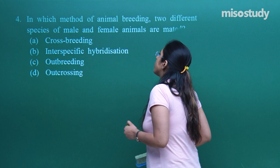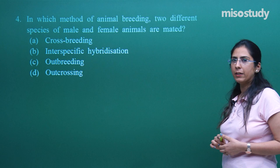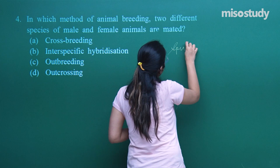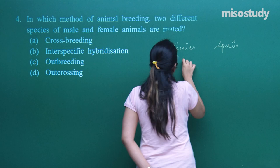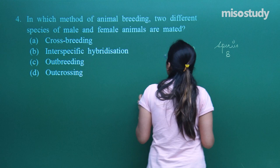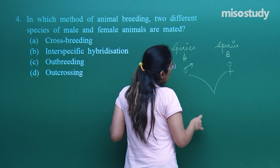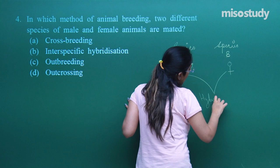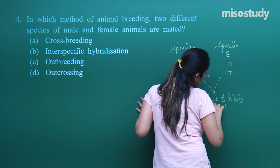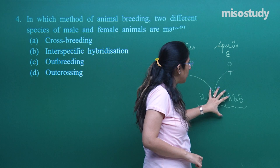In which method of animal breeding are two different species of male and female animals mated? They are saying we have species A and species B. Out of these two species, the male of one and the female of the other are mated. We prepare one breeding experiment and get a hybrid — a hybrid of A and B. The reason we go for this hybridization experiment is so that good qualities and good genes from both species A and B come into that hybrid.